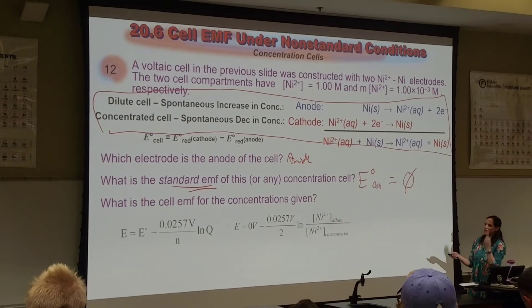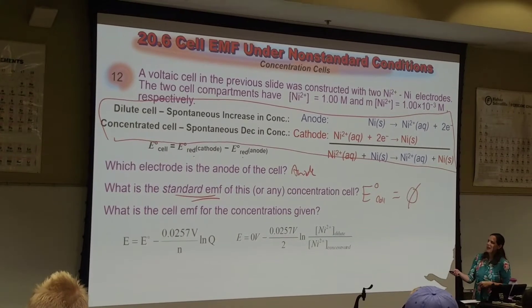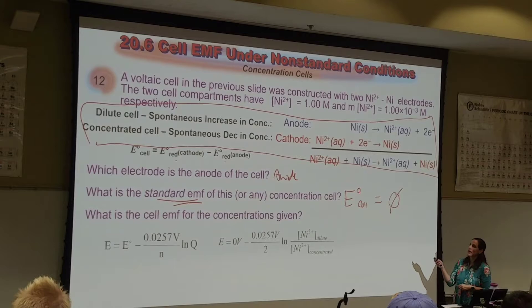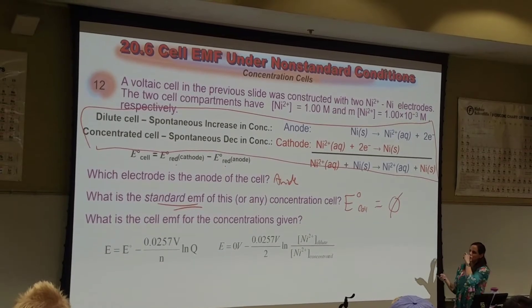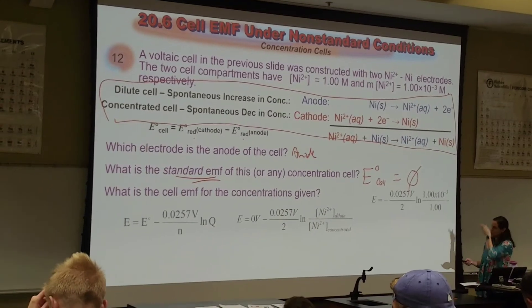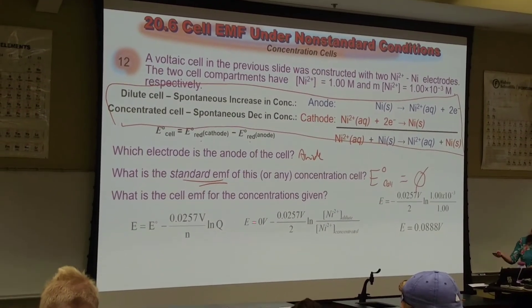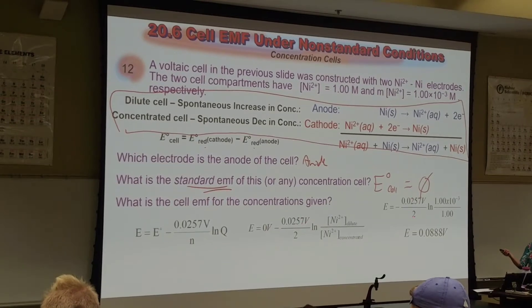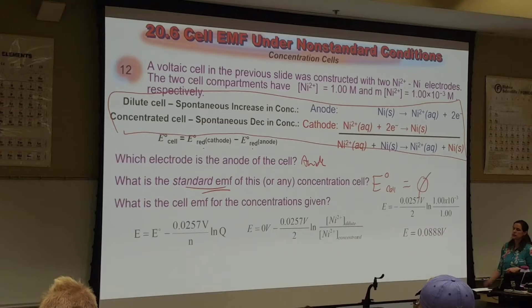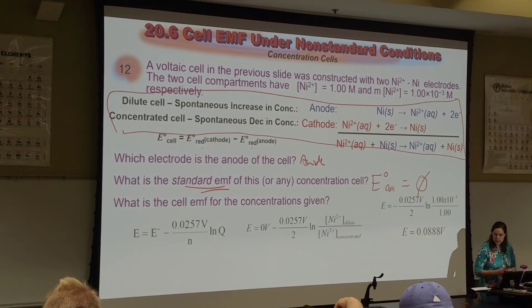So if you plug in something the wrong way, then yeah, you did it wrong. Also, the E standard is zero for a concentration cell — those are two things you want to remember for concentration cells. The rest is plug and chug. For E, without the zero, we have to do natural log for a concentration cell.